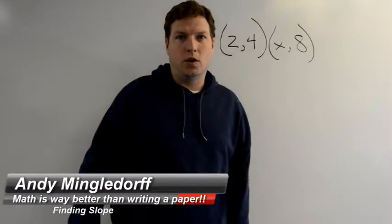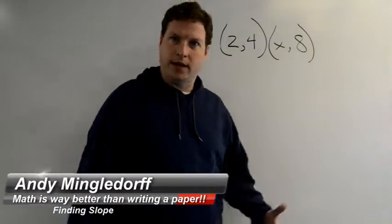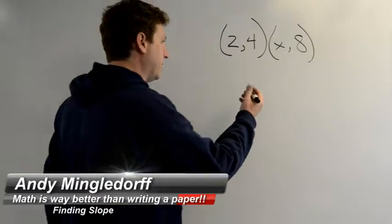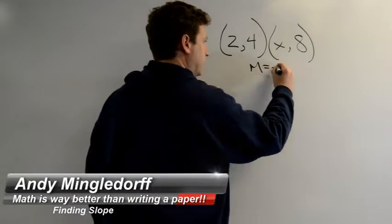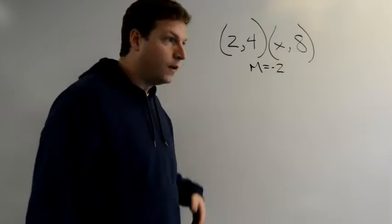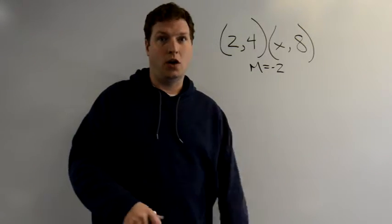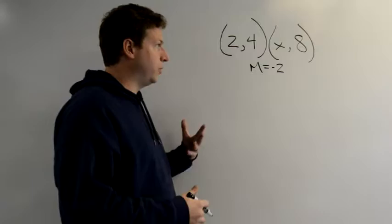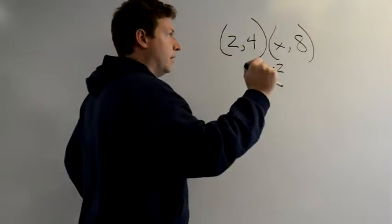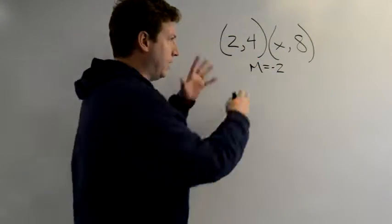Alright, so we have these two points, we're missing a value here, and if I was to tell you that the slope is negative 2, we'd actually find the line that this is on and make an equation for it. We could find the missing value, we can do anything we want.